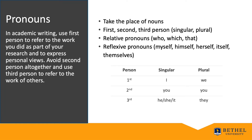In the first column, notice we have first, second, and third person. The middle column shows the singular pronouns: I, you, he, she, it. The last column shows the plural pronouns: we, you, they.